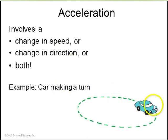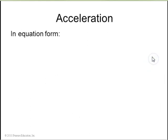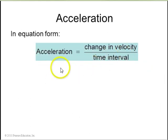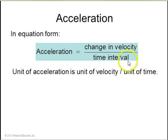It involves a change in speed, or a change in direction, or it could be both. Example here is a car making a turn. Its velocity is not constant as it goes around in a circle, and therefore it's accelerating. In equation form, the acceleration is the change in velocity divided by the time interval. And the units are whatever your units of velocity are divided by your unit of time.